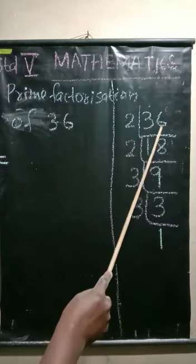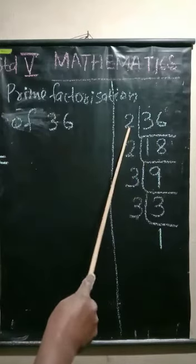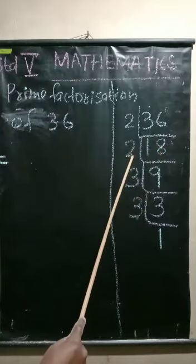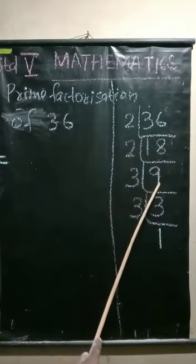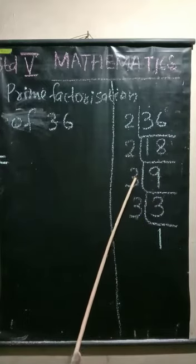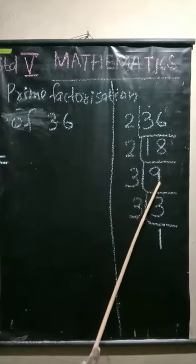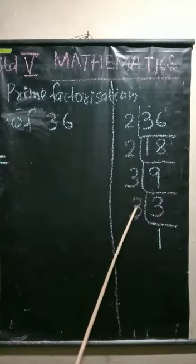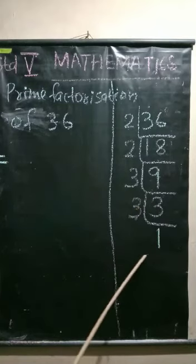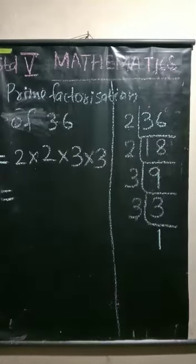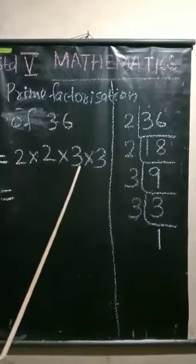36 is an even number, so divide it by 2 and get the number 18. 18 is an even number — again divide it by 2 and get the number 9. 9 is an odd number and is a multiple of 3, so divide it by 3: 9 divided by 3 equals 3. 3 is a prime number, so divide it by itself and get 1. So the prime factorization of 36 is 2 × 2 × 3 × 3.